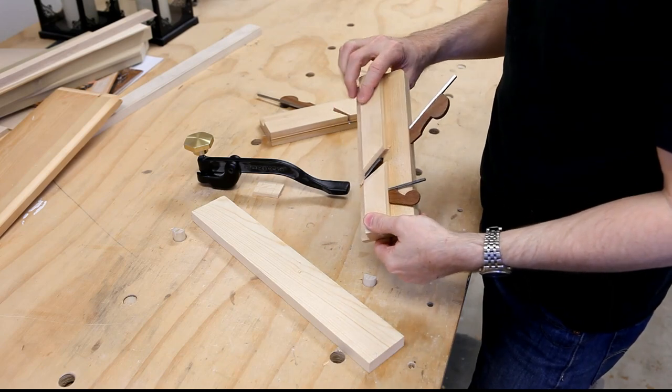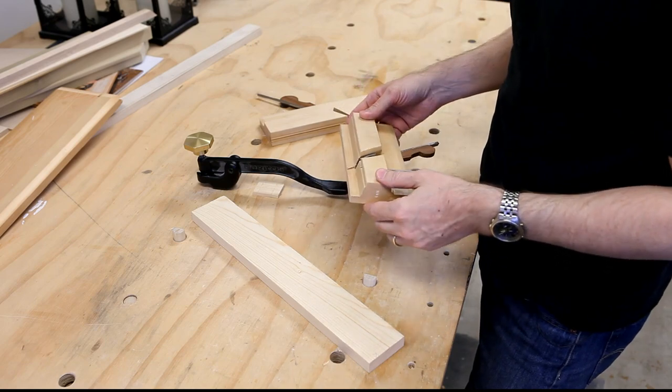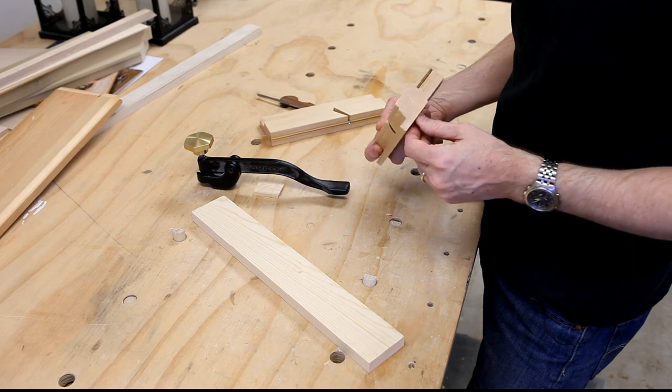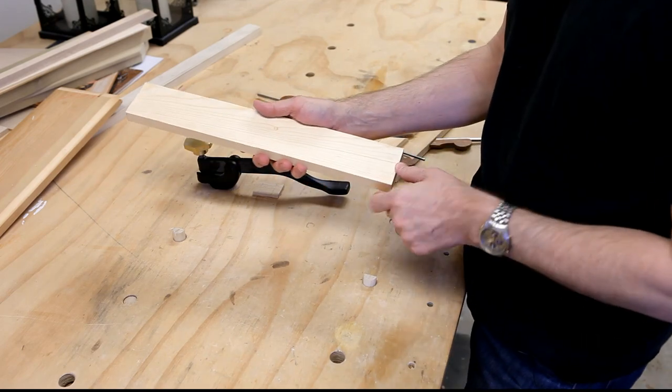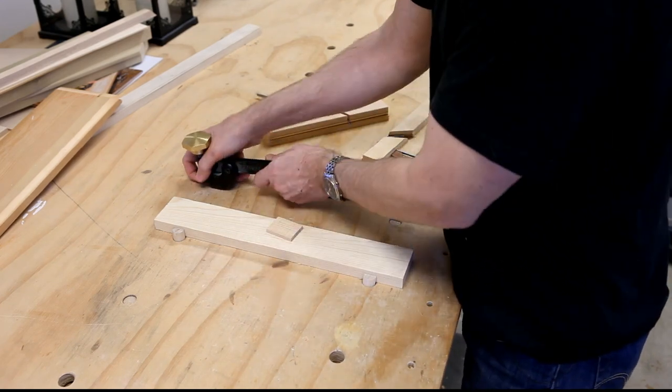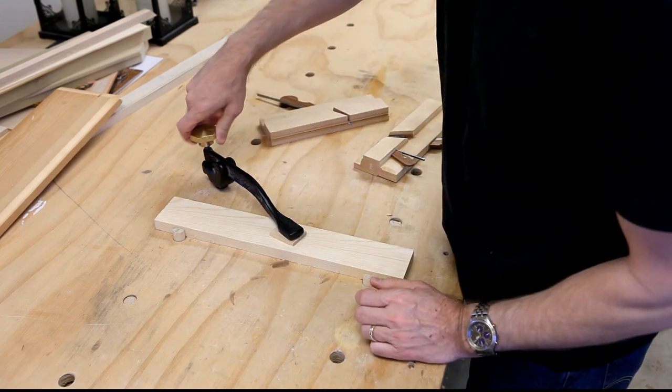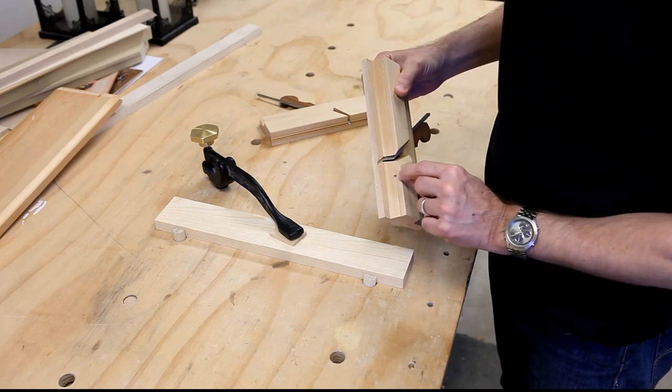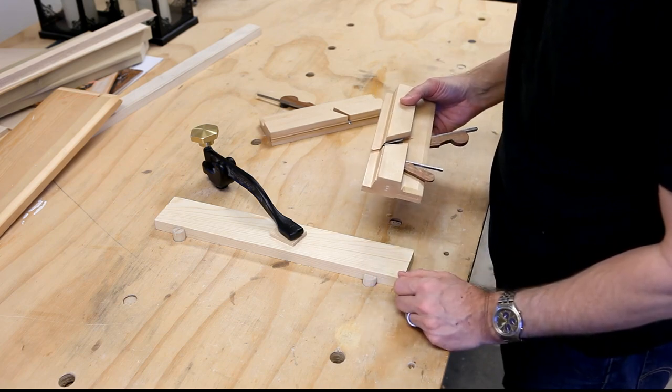Okay, well I've cleaned up the irons, oiled them and put everything together and given them a test run and they were working great. So I decided to demonstrate first the panel raising plane. So I'm just going to use a bit of pine and I'll do the end grain first. It really works surprisingly well, particularly this knicker in the front which scores the cross grain and you really end up with a nice cut.